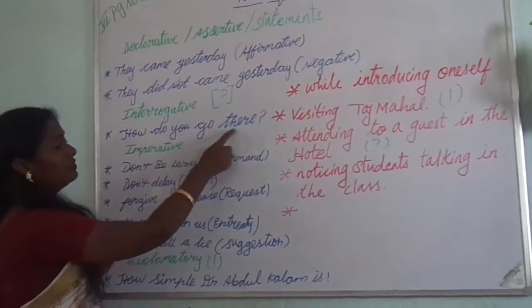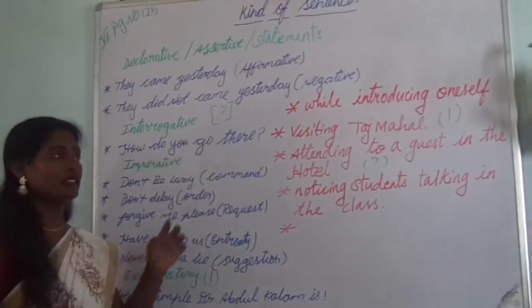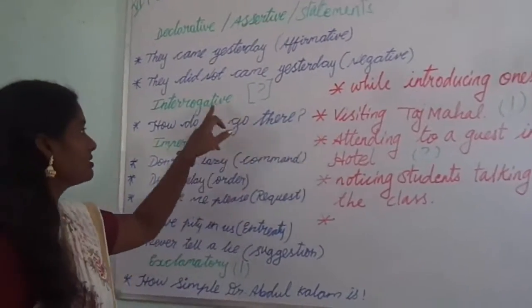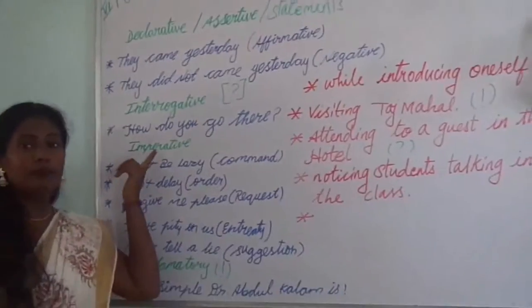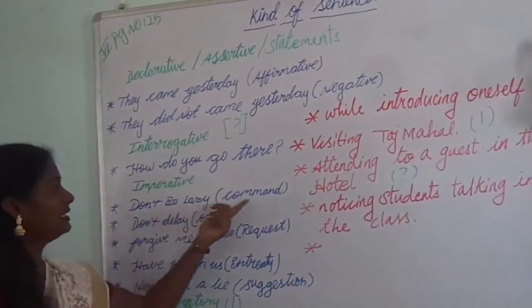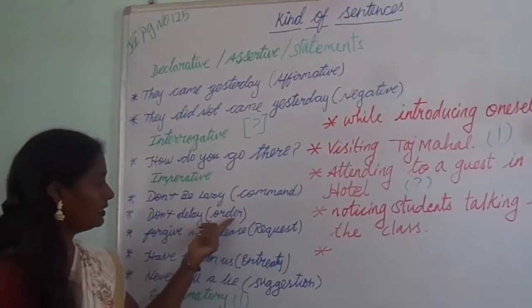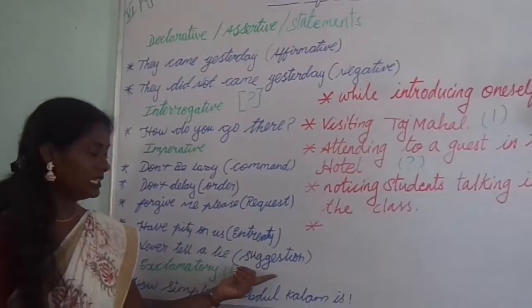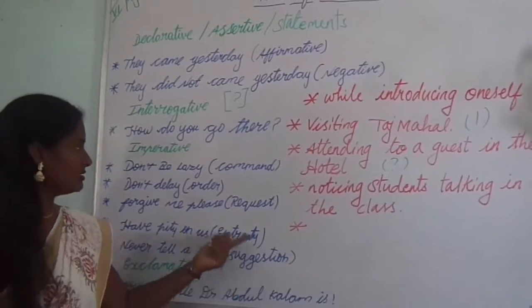Interrogative is question. For example, 'How do you go there?' — it is a kind of question, so it is called interrogative. Then in imperative types of sentences we have: command, order, request, entreaty, and suggestion.